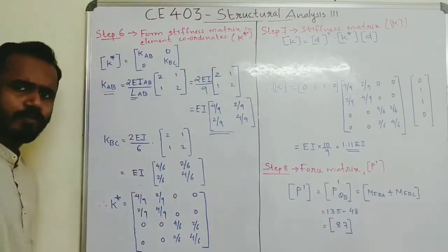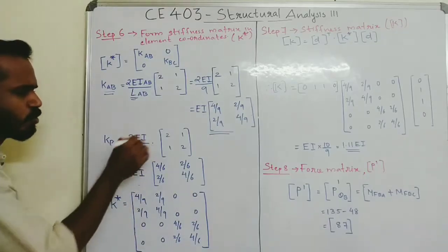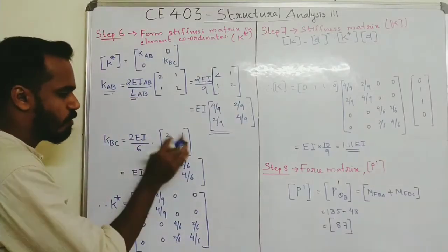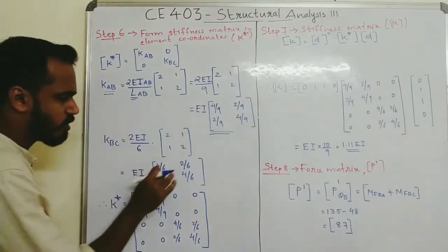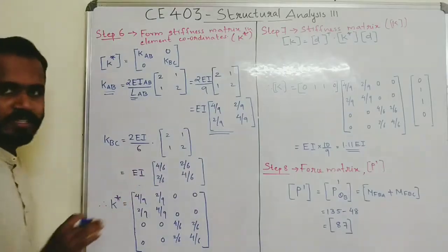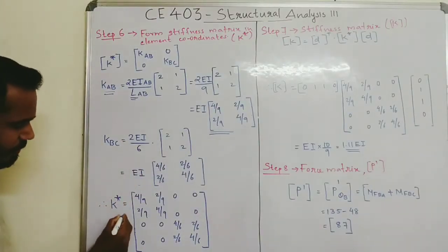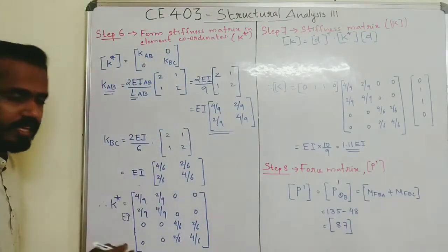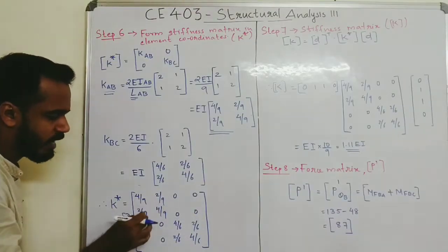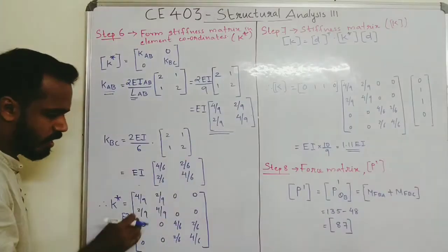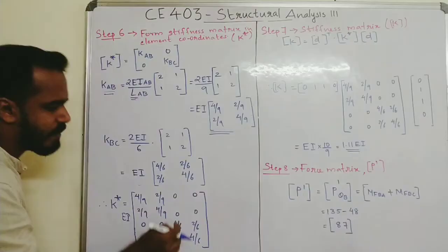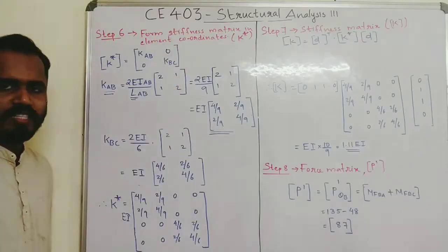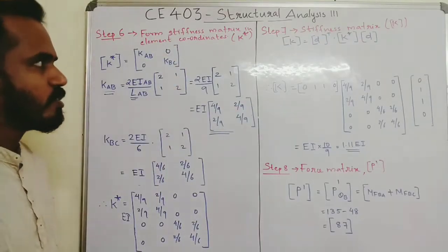Assembling K-star: KAB contributes [4/9, 2/9; 2/9, 4/9] and KBC contributes [4/6, 2/6; 2/6, 4/6], with EI factored out. The remaining off-diagonal block elements are 0. This is the full stiffness matrix in element coordinates, K-star.